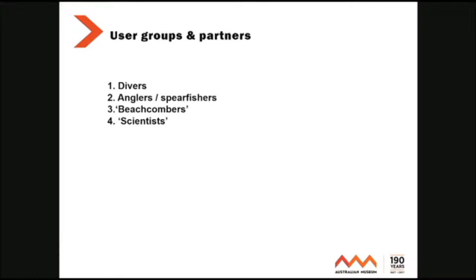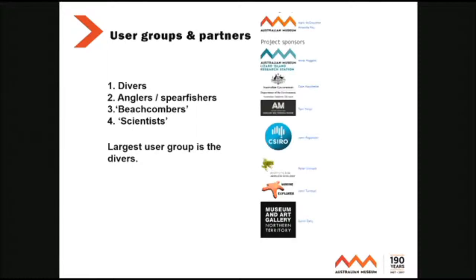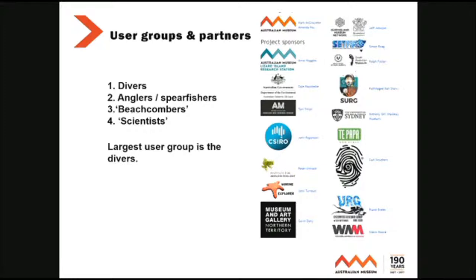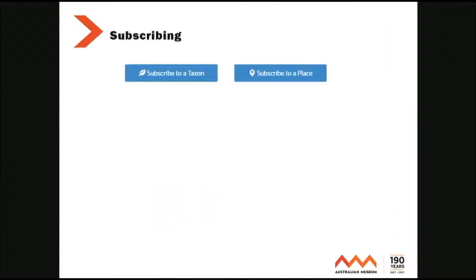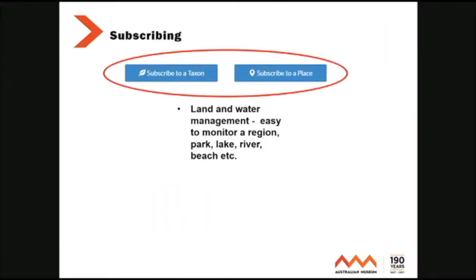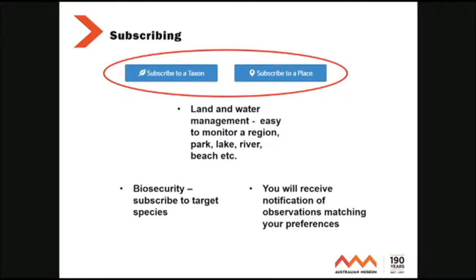User groups and partners: divers, anglers, spearfishers, beachcombers, scientists. At the moment the divers are the biggest user group. We've got a lot of divers on board. We've got, I think it's 17 at the moment, different institutions — universities, museums, clubs, survey groups — involved. Red Map we're working with closely. You can subscribe to a taxon or subscribe to a place, which means land and water management is easy to monitor a region. By that, you can monitor pest species and you'll receive notifications when these things pop up in the project.